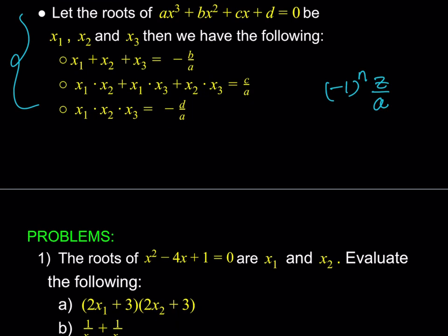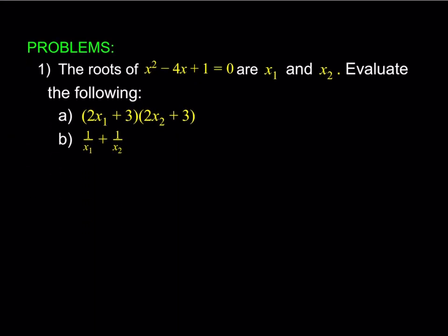Let's take a look at some examples. Problem 1: the roots of this equation are x1 and x2, and it has two parts. Since this is quadratic, we can find x1 plus x2, which is negative b over a. In this case it's 4 over 1. When a is 1, the sum of the roots is just negative b, and the product is c. So the sum is going to be 4, and the product is going to be 1.